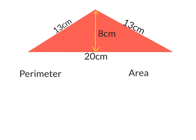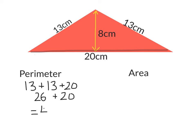In this example we have an isosceles triangle where two sides are the same length. The height runs through the center at 8 centimeters, and the base along the bottom is 20 centimeters. First let's work out the perimeter — the distance all the way around the shape. It is 13 plus 13 plus 20. 13 and 13 is 26, plus 20 gives a perimeter of 46 centimeters.